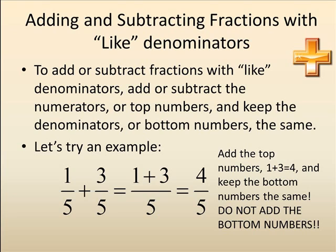Let's try an example: 1 fifth plus 3 fifths. Notice we are only adding the top numbers: 1 plus 3 equals 4. And we keep the bottom number the same. So 1 fifth plus 3 fifths equals 4 fifths. To summarize: we add the top numbers, 1 plus 3, which equals 4, and we keep the bottom numbers the same. We do not add the bottom numbers. Please remember this.